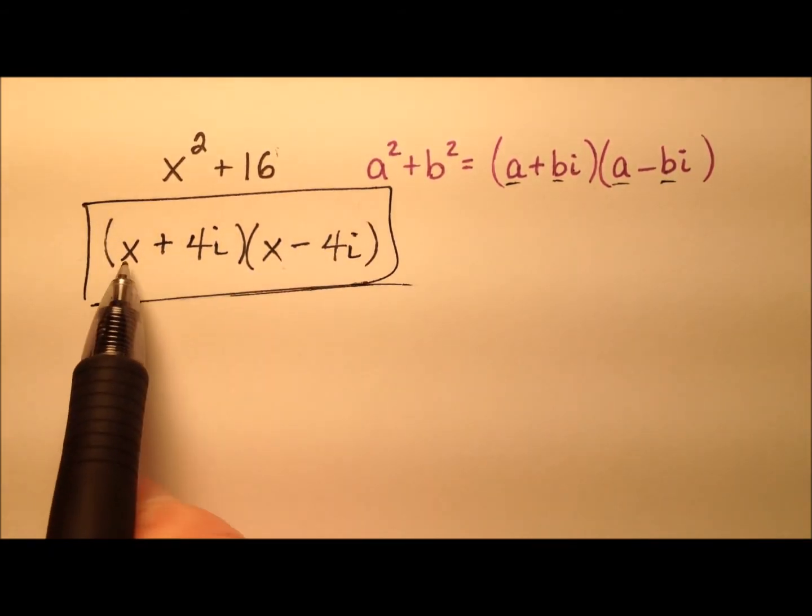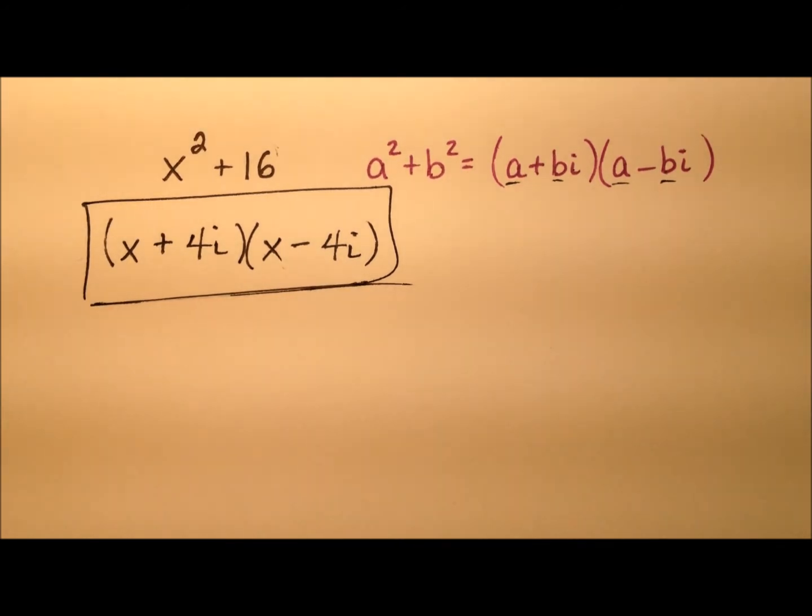So we're going to have quantity x plus 4i times quantity x minus 4i.